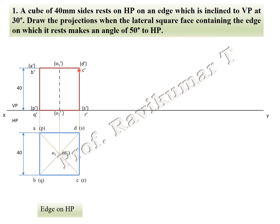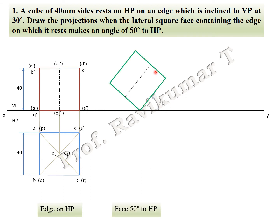The next position: the edge on which it is inclined to VP at 30 degrees is the final position. The lateral square face containing the edge on which it rests makes an angle of 50 degrees with HP. This lateral square face is containing the edge. The edge is inclined to HP at 50 degrees — not the axis. Please remember, the edge is inclined to HP at 50 degrees. The PSR face will be placed on the XY line, then rotated to 50 degrees. Naming is done.